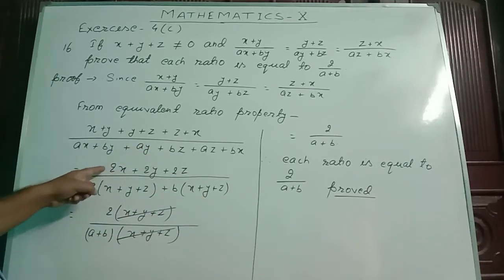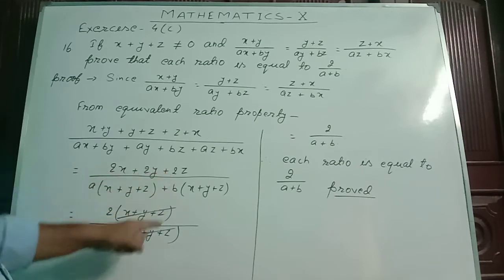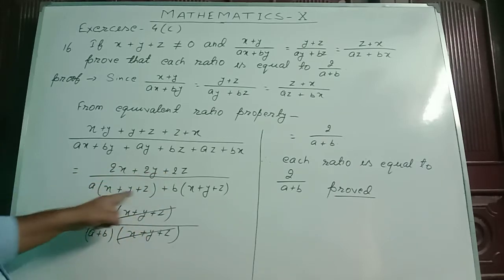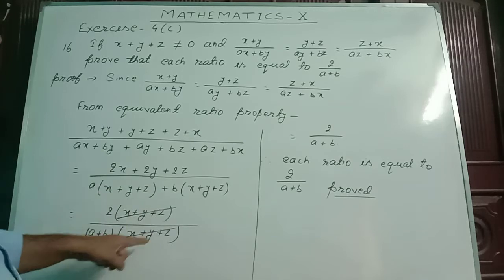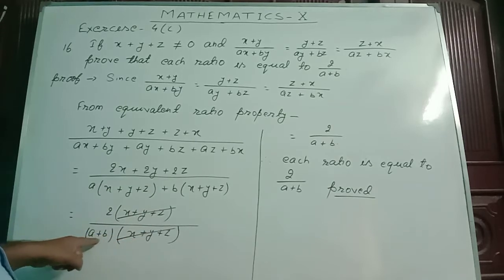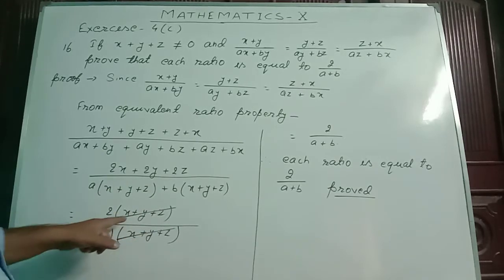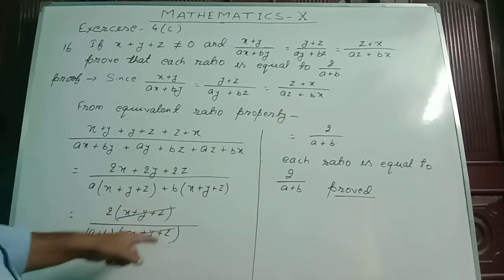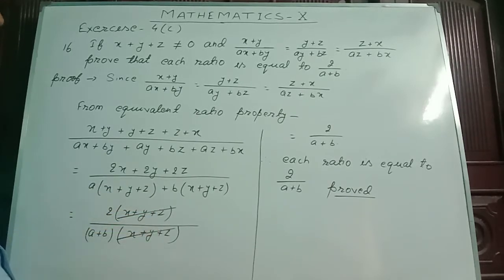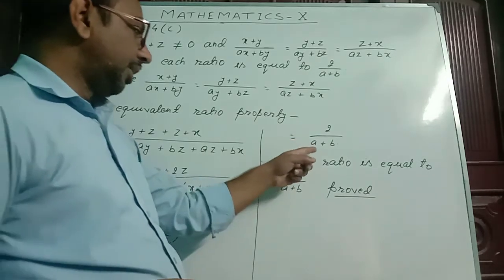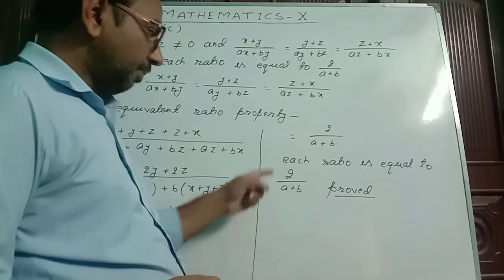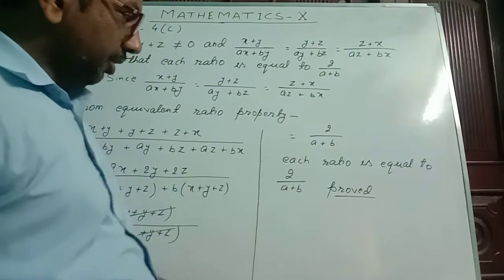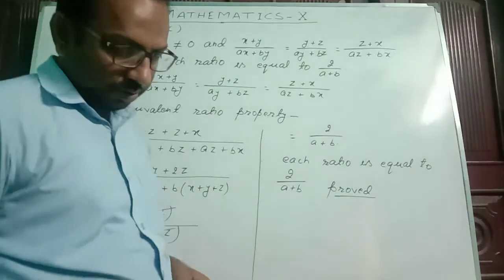Now, we are getting 2 common, with x plus y plus z inside the bracket, and here x plus y plus z common inside the bracket gives a plus b. So, this x plus y plus z and x plus y plus z both are cancelled. That is equal to 2 by a plus b. Therefore, each ratio is equal to 2 by a plus b. Proved.